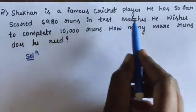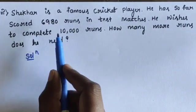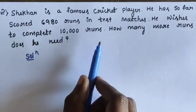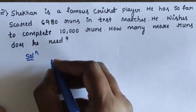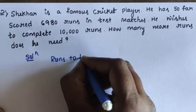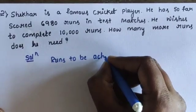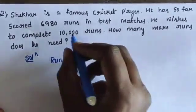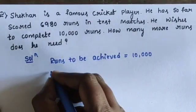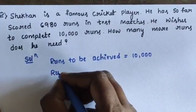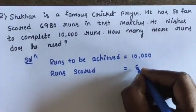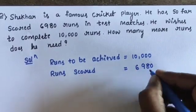He is a famous cricket player. He has scored 6,980 runs in test matches. He wishes to complete 10,000 runs. Runs to be achieved is equal to 10,000 runs. Runs scored is equal to 6,980 runs.